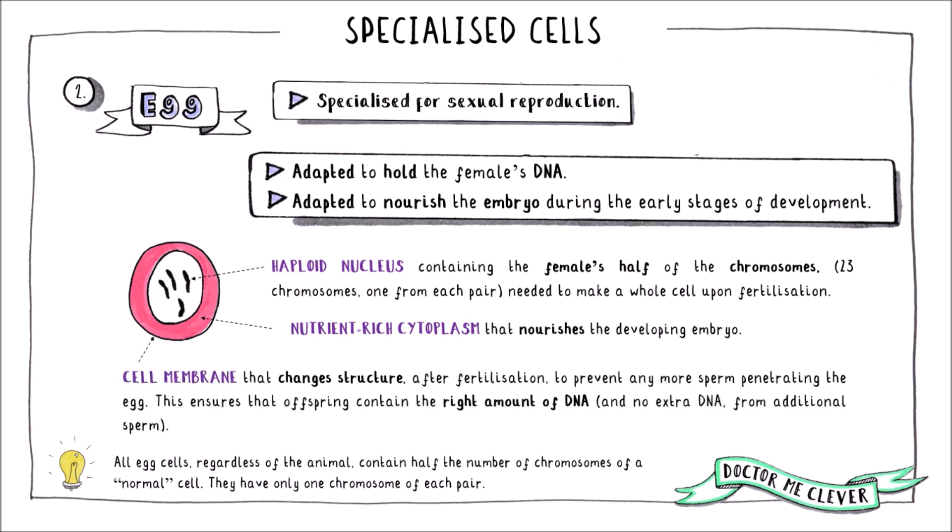Finally, the egg has a very special cell membrane that is able to change its structure once the sperm cell has entered the egg. These changes block any other sperm cells from getting in and ensure that the resulting embryo has the right amount of DNA.